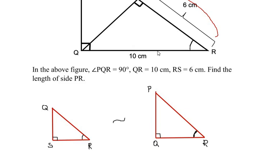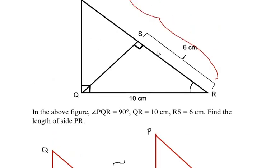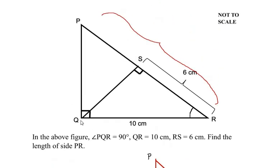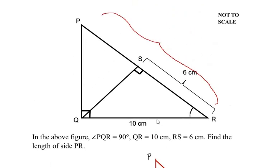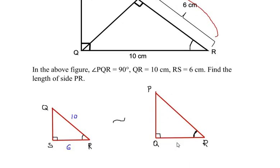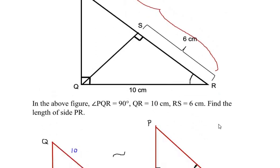Let us write down the values of the given sides. Now in triangle QSR, QR is 10 centimeters and SR is 6. So we have QR as 10 and SR as 6. And in the triangle PQR, QR is given as 10, so let us write here 10, and we need to find out the side PR, so let us take it as x.